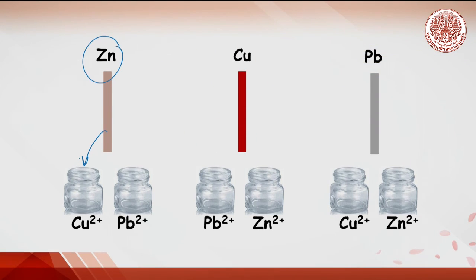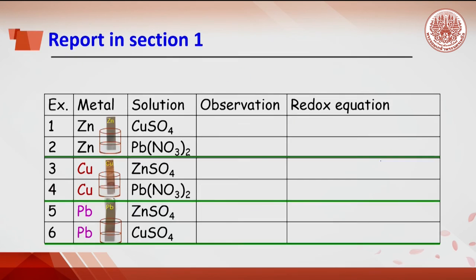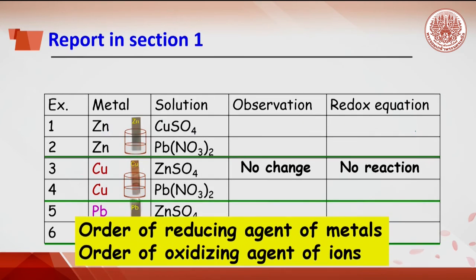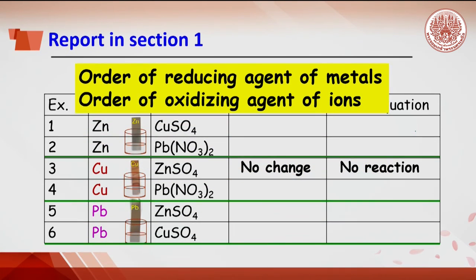Repeat the reaction by placing the copper strip into lead ion and zinc ion solutions, and the lead strip into copper ion and zinc ion solutions. From the observations, if nothing happens write 'no change' in the observation column and 'no reaction' in the redox equation. If placing zinc into copper solution, the observation will be copper deposition. With six experiments, the order of reducing agents of the metals and the order of oxidizing agents of the ions are reported.